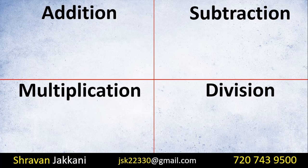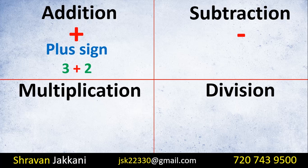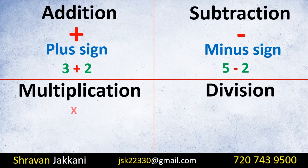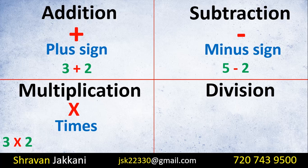For the 4 basic math operations, we use symbols. For addition, we use the plus sign. So we write 3 plus 2. For subtraction, we use the minus sign. So we write 5 minus 2. For multiplication, we can use the cross symbol as a times symbol, or a dot. We can write 3 times 2 using different symbols.